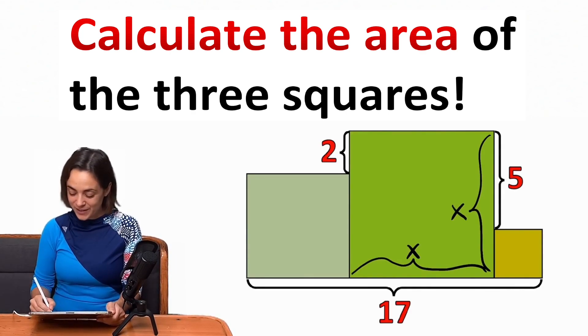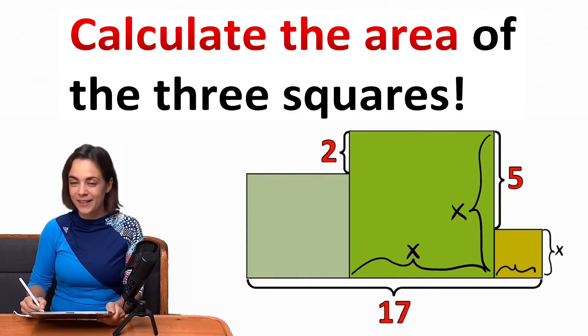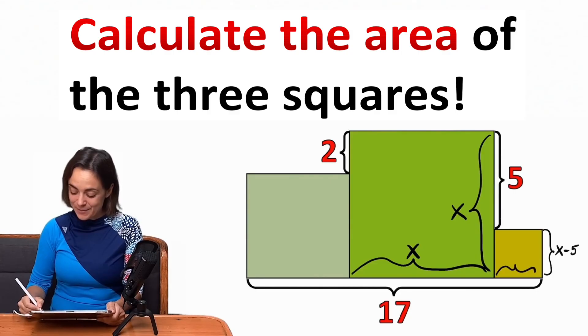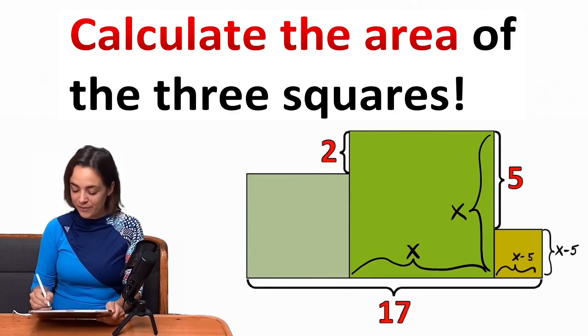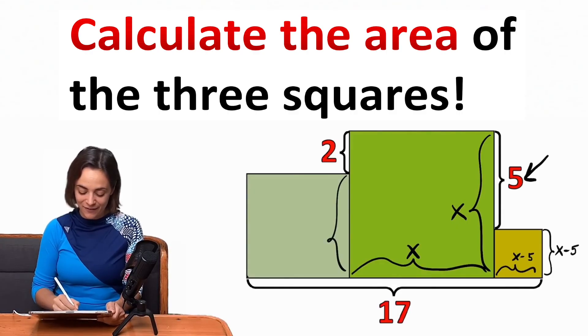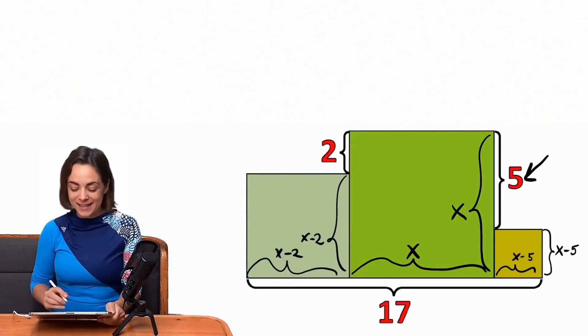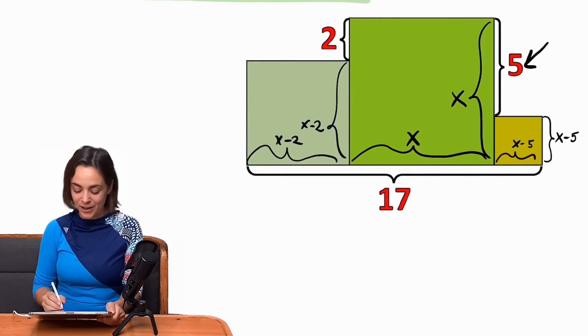Then I could also say for the right square that the side length has a certain length depending on x, namely x minus 5. It is 5 units smaller than the middle square. And in the same way I can find x minus 2 as the side length on the left square, and then I still have the 17 down here unused.